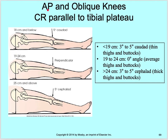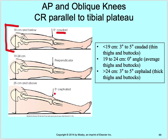As we talked about and as you saw in your book, your AP and oblique knees central ray is parallel to the tibial plateau. That comes into the measurement at the ASIS. If it's 18 centimeters and below, it's a 5 degree caudad angle to that tibial plateau. If your ASIS from tabletop to ASIS is 19 to 24 centimeters, then you're perpendicular. And as the patient becomes larger, 25 centimeters and above, your angle becomes cephalad — 5 degrees cephalad.